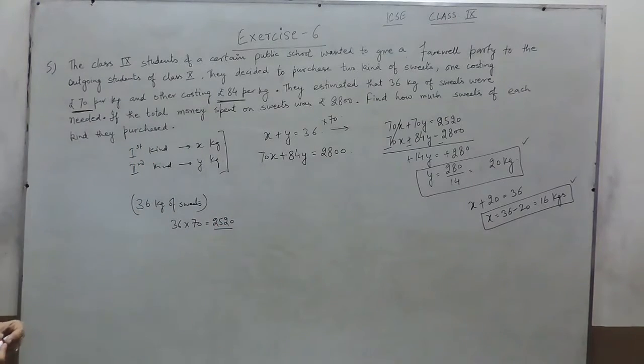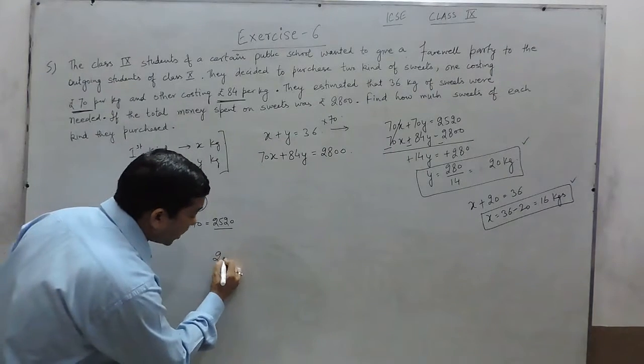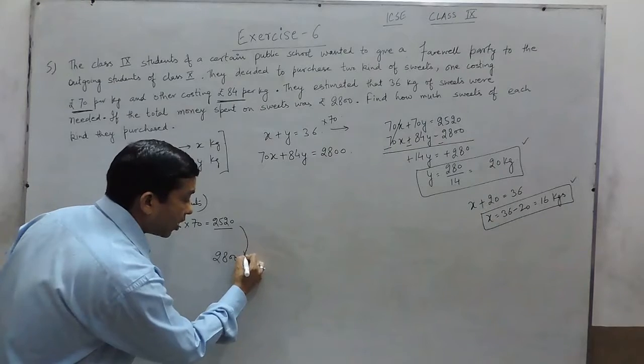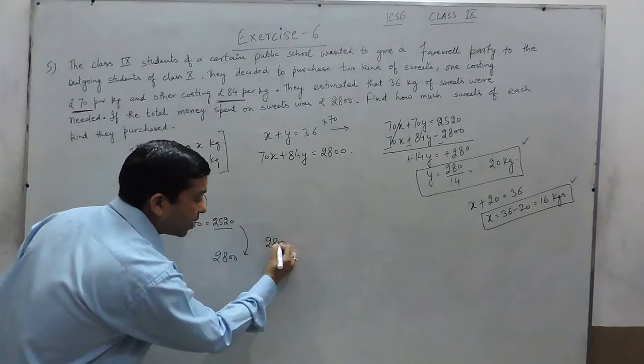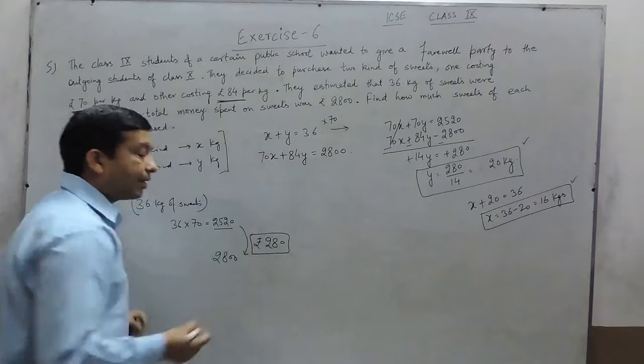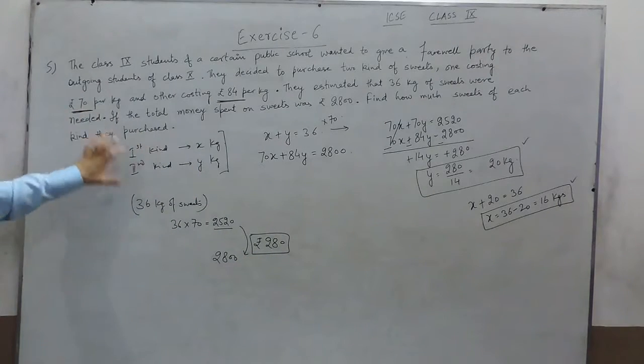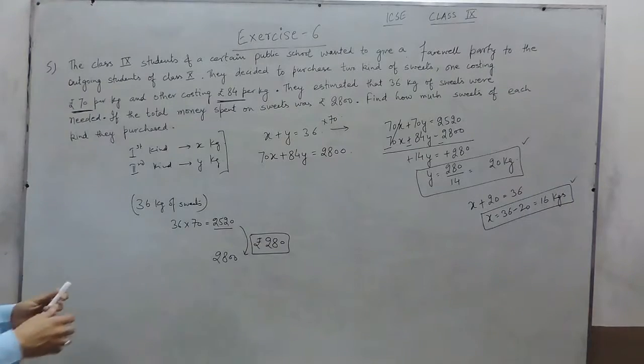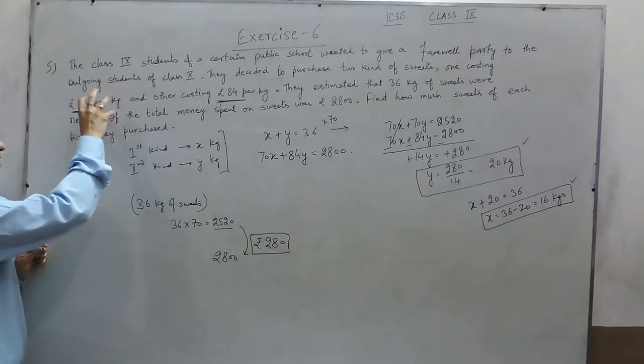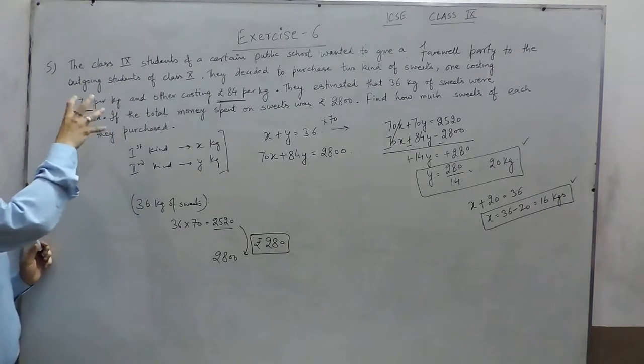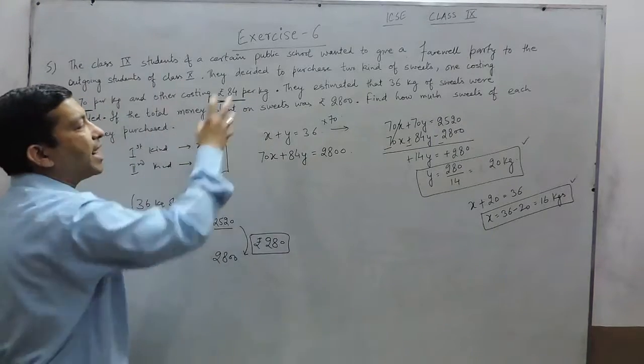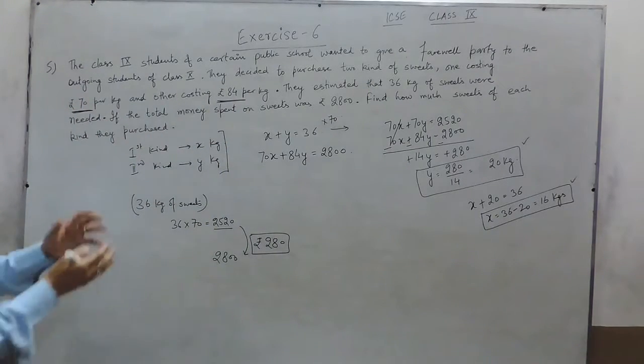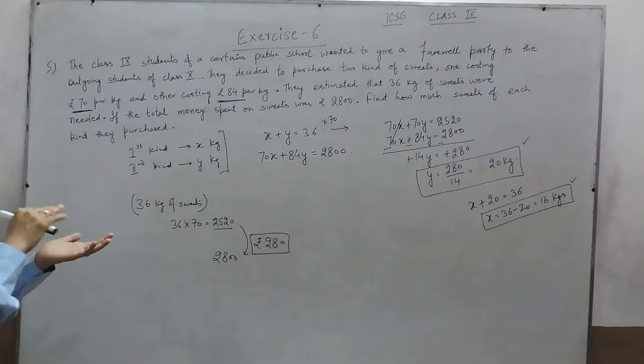If we purchase the total sweets of the first kind, then the cost will be 2520. But, actually the total cost is 2800. That means the total cost is 280 rupees more than if we purchase all the first kind of sweets. Now, suppose I replace 1 kg of sweets of the first kind with the second kind of sweets, then the weight will remain the same.